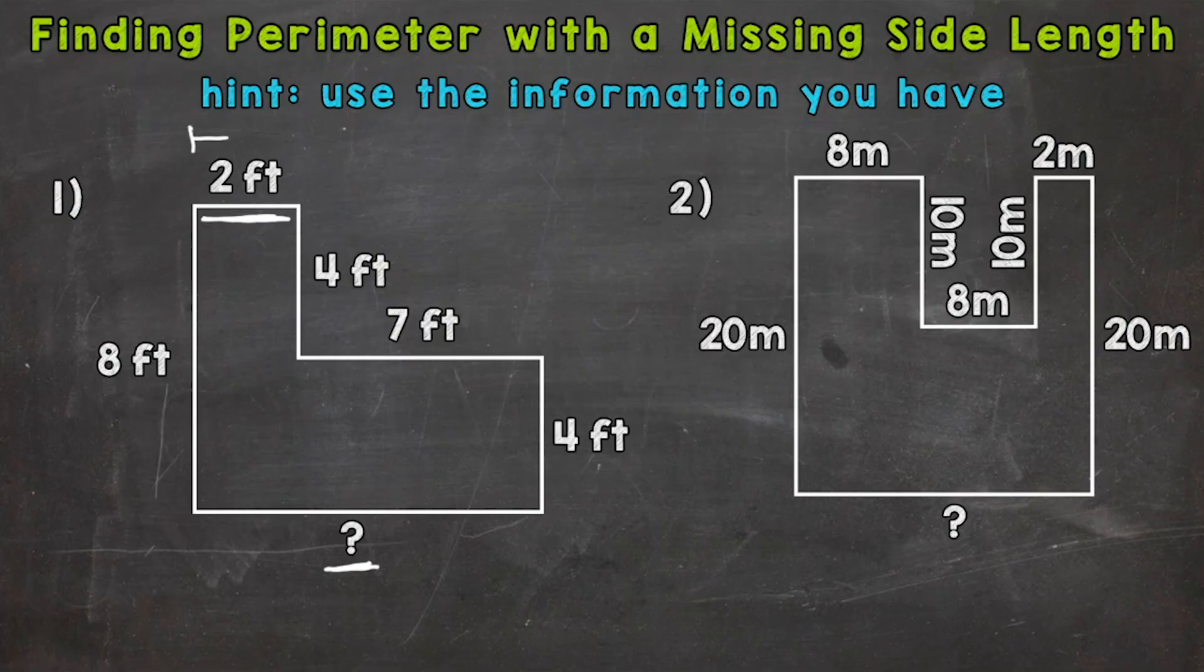So if we think about it, we need to go all the way across here to match the missing side length. So that two feet doesn't go all the way across. So we need another portion and it's going to be this seven feet here. If we have that seven feet plus that two feet, that's going to match that bottom side. So two feet plus seven feet gives us nine feet.